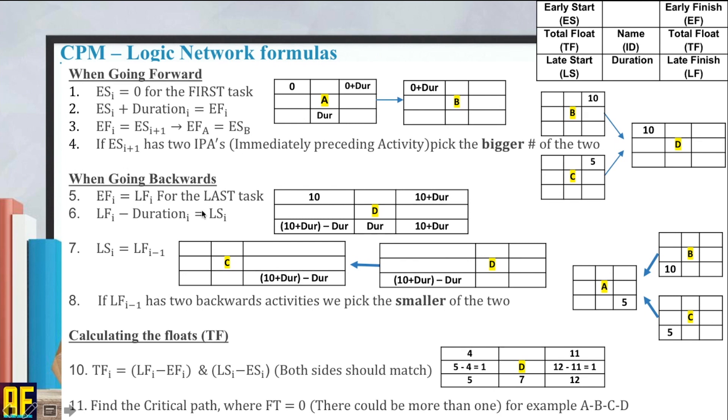Then once I'm done and I'm going backwards, I'm saying that my EF equals LF for my last task. And now that I'm going backwards, LF minus duration equals my LS. Now when I'm going backwards between activities, my LS equals LF of i minus one, which means the previous activity. The LS of D equals LF of C. If my LF has two backwards activities, this time we pick the smaller of the two. So if I have LS of 10 and LS of 5, this time when I'm going backwards I'm going to pick LS of 5.